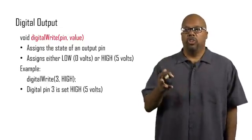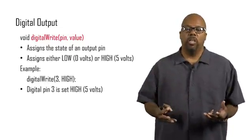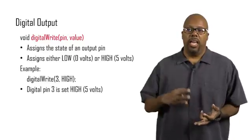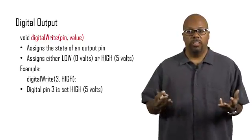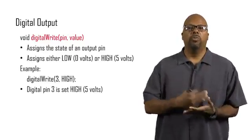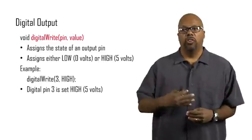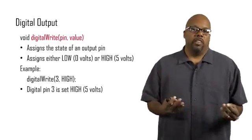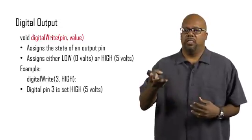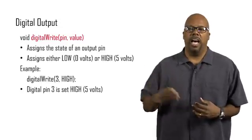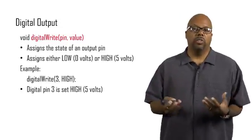If you want to write to a pin, you call digitalWrite. That takes two arguments, the pin and the value that you want to write to it. The value has to either be LOW or HIGH, which would be 0 or 1, 0 volts or 5 volts. So it assigns the state of the pin. If you say digitalWrite 3 comma HIGH, like I do here, it's going to set pin 3 to high, which would be 5 volts.